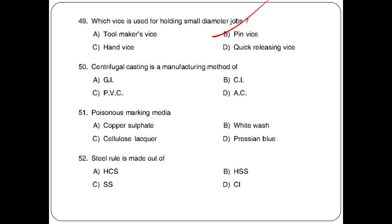Centrifugal casting is a manufacturing method of — options: GI, CI, PVC. The answer is CI cast. Marking media: poisonous marking media — options: copper sulfate, whitewash, Prussian blue. The answer is option A: copper sulfate. Steel rule is made out of — options: HSC, HSS, SS, CI. The answer is option C: SS — stainless steel.